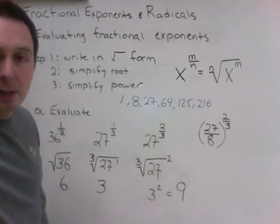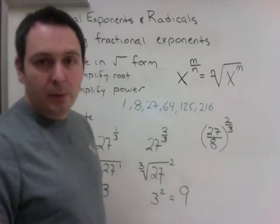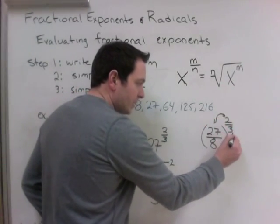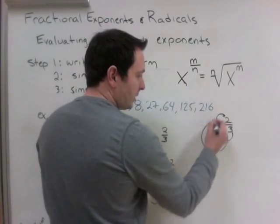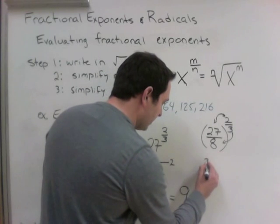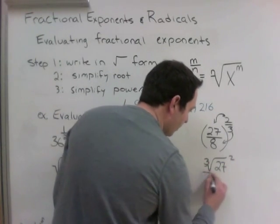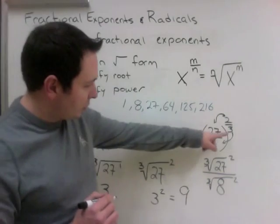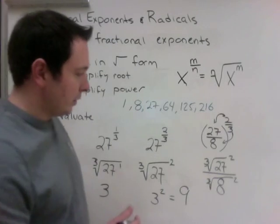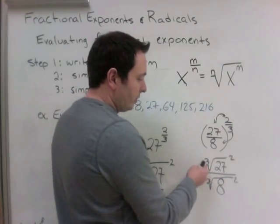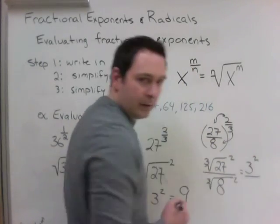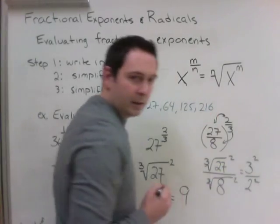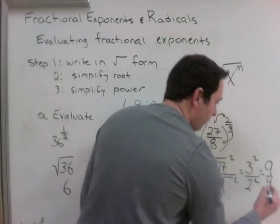For (27/8) to the power of 2 thirds: when you see a fraction with an exponent outside brackets, the exponent affects both parts. Using boots and hats on both 27 and 8, we get the cube root of 27 squared over the cube root of 8 squared. Do the roots first: cube root of 27 is 3 squared, and cube root of 8 is 2 squared. Final answer: 9 over 4.